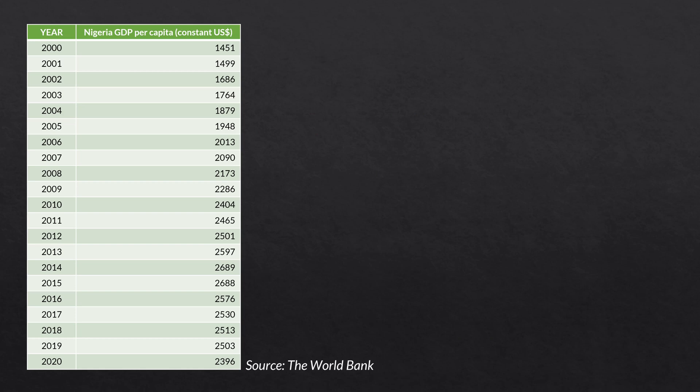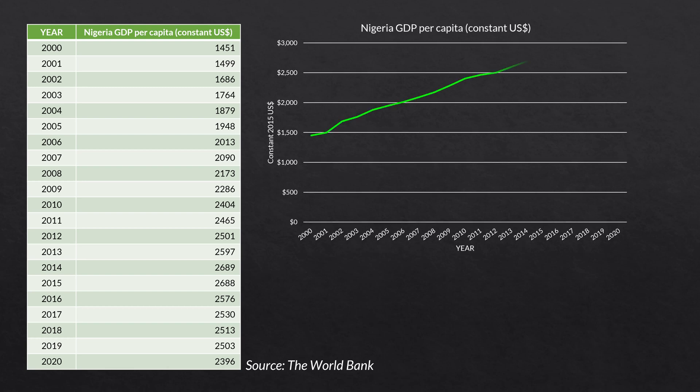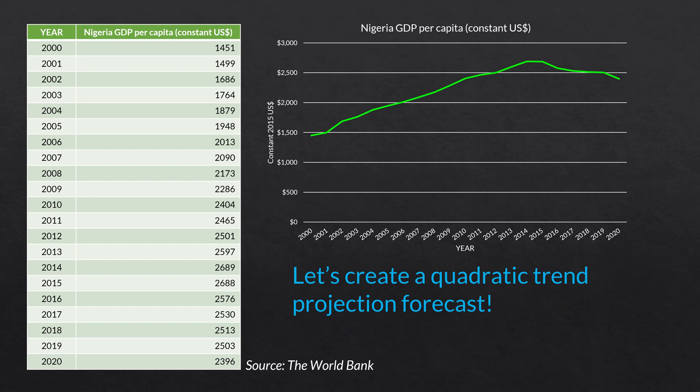So here's the same data we've been using. This is Nigeria's GDP per capita from the year 2000 all the way up to the year 2020. Put it on a graph, it looks something like this. Now using this data and this graph, let's create a quadratic trend projection forecast, and it might look something like this blue line here. Now I did this freehand so that line is very poor artistically, but I did the best I could. So our final line might look something like that.